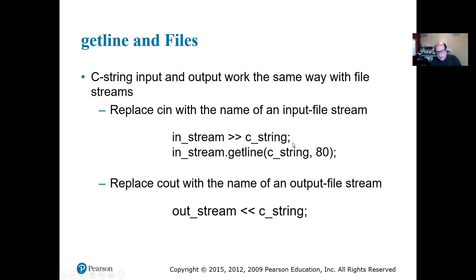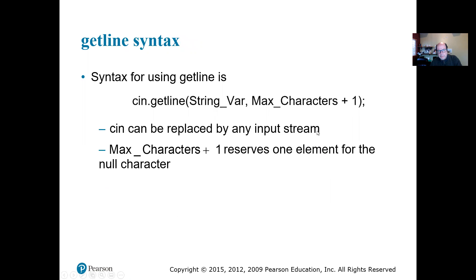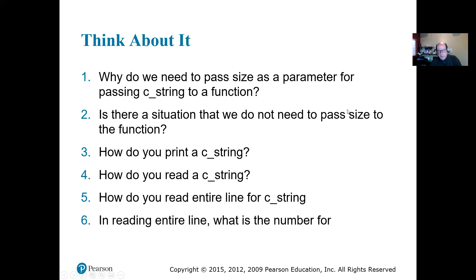You've done something similar to this with getline for strings. So getline is a member function — you're going to pass a string variable and specify how many characters you want, plus one for backslash-0. That's where I'm going to stop. Take a look at these things and think about how you're going to read, how you're going to print, and how you're going to read the whole line — then we can talk about it when you're ready.